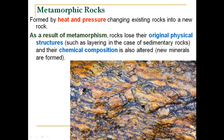Now we will learn how metamorphic rocks are formed. Metamorphic rocks are formed by heat and pressure, changing existing rocks into a new rock — this process is called metamorphism. When a rock is subjected to a lot of heat and pressure, it converts into a new metamorphic rock. Rocks lose their original physical structure; for example, layers in sedimentary rock disappear, the chemical composition gets altered, and new minerals form.